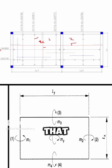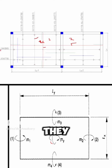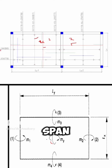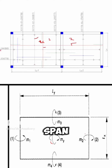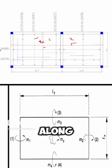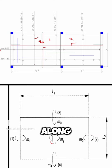If you look at the span, you can see that my and mx are both along the short span. Along the short span of this slab, you have reinforcement along the x and also reinforcement along the y.